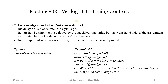The next important timing control statement in Verilog is intra-assignment delay, which is also a non-synthesizable construct. We cannot use intra-assignment delay in RTL code written to implement hardware, but we can use it in a test bench for simulation. This delay is placed after the equal sign — the left-hand side assignment is delayed by the specified time units, but the right-hand side expression is evaluated before the delay. This is important when a variable may be changed in a concurrent procedure.